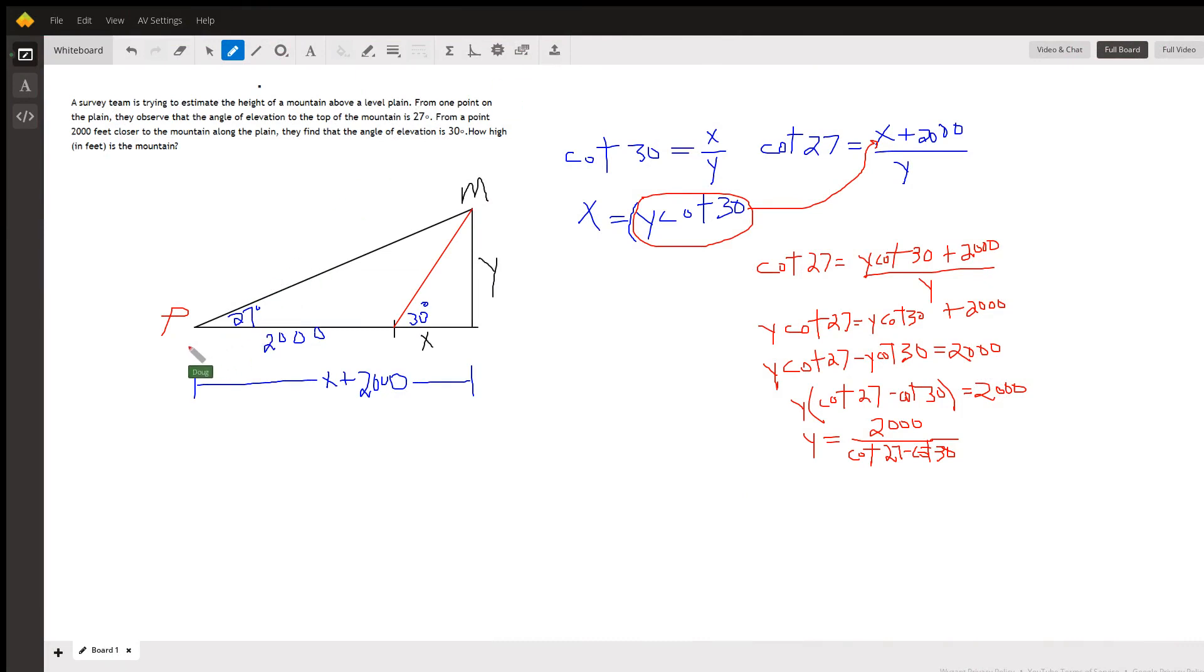Okay, here's a diagram depicting the situation. On a level plane we're at point P and we see that the angle of elevation to the top of the mountain M is 27 degrees. We move 2000 feet closer and the angle of elevation of that same mountaintop is 30 degrees.